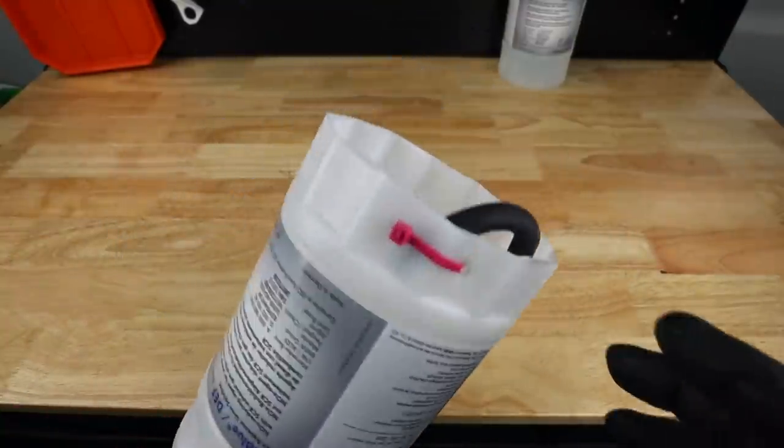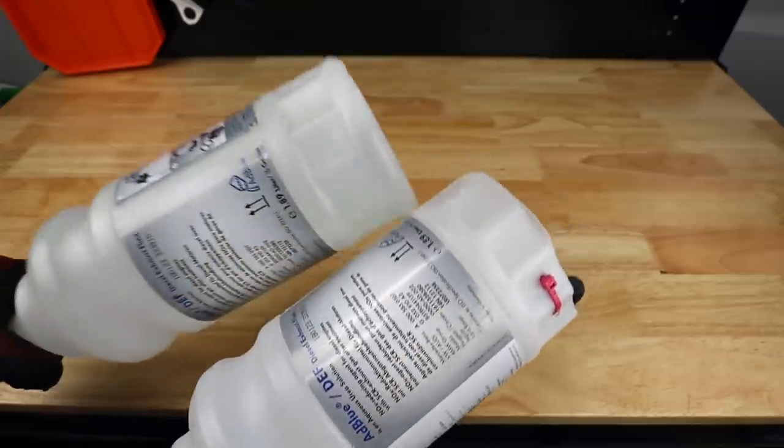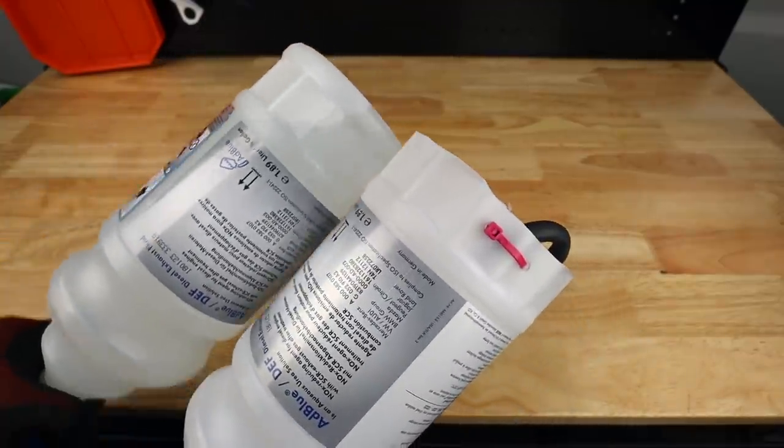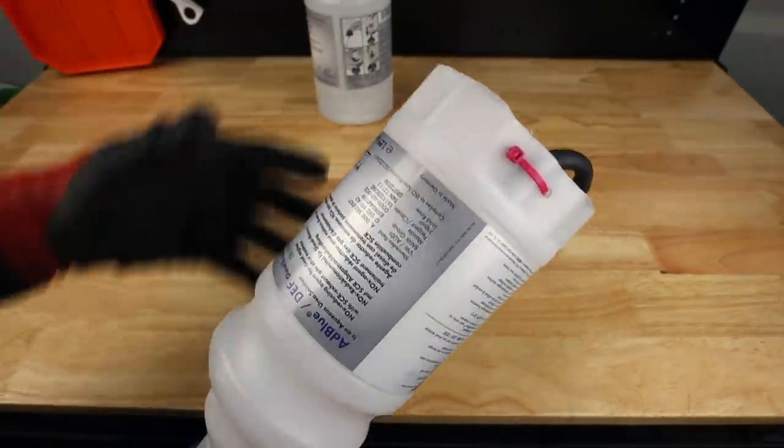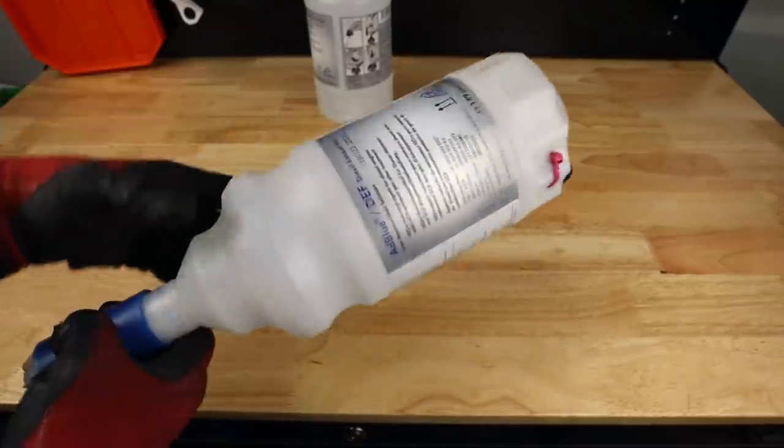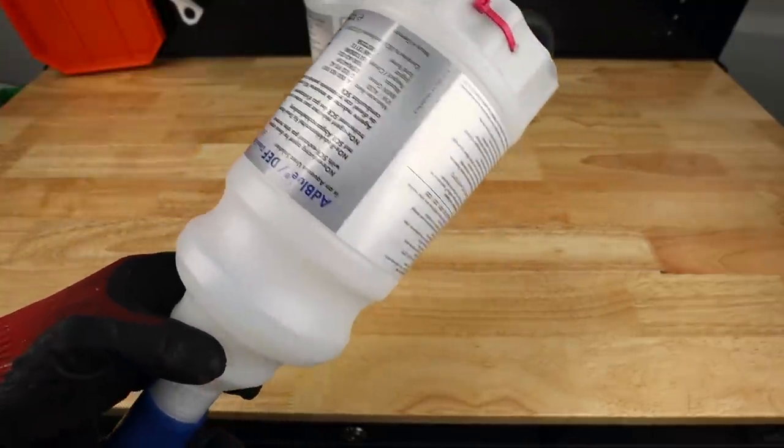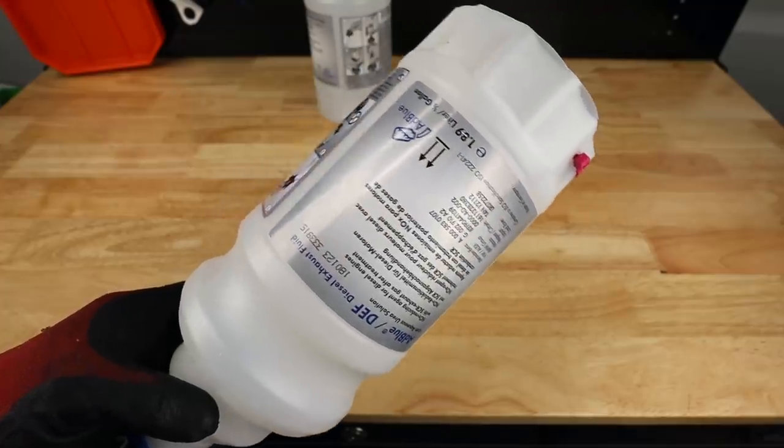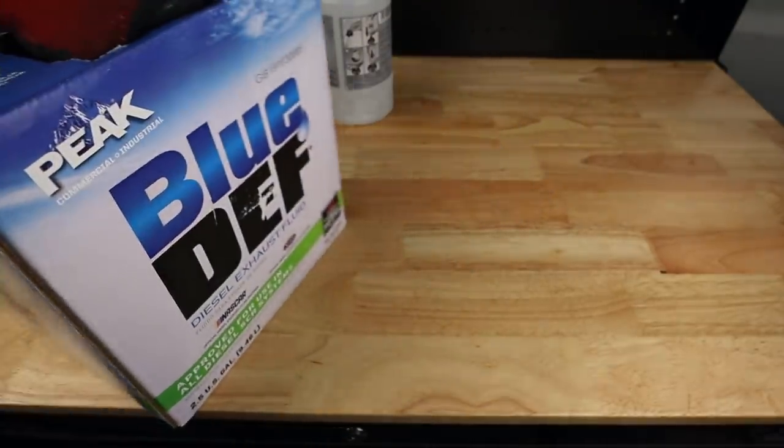So here is what our modified funnel looks like compared to our original one. Now what we can do is we can screw this onto the car. And instead of using five of these to get our two and a half gallons or 10 to get our five gallons, we can pick up something like this, the bulk container,